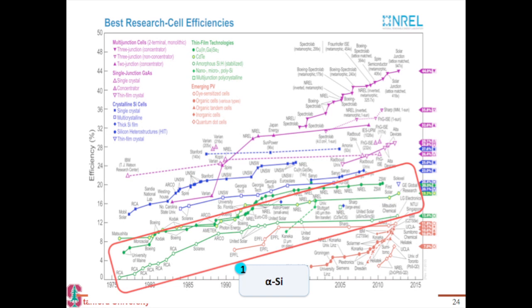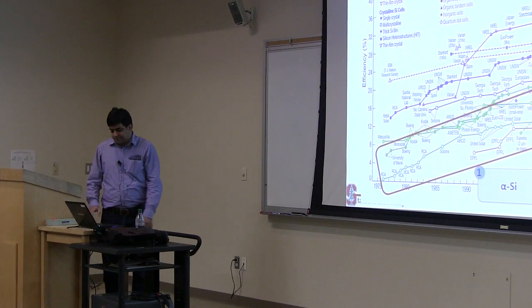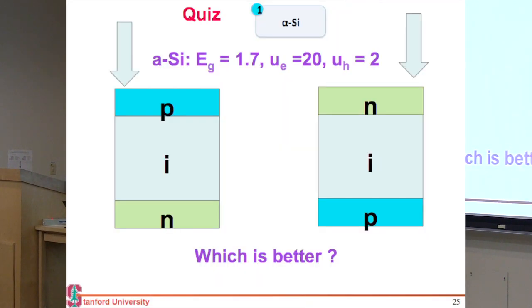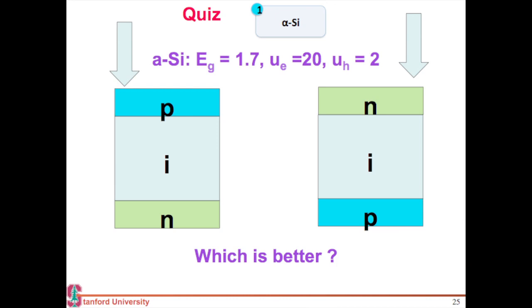Let's look at amorphous silicon first. Most of these amorphous silicon cells, shown in green, line up over here and max out at efficiencies of around 11%. Amorphous silicon has a band gap of around 1.7. It has an electron mobility of 20 and a hole mobility maximum of 2.